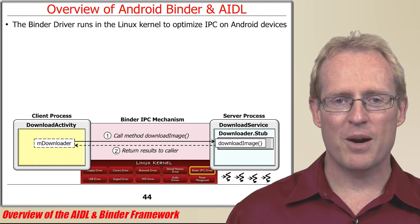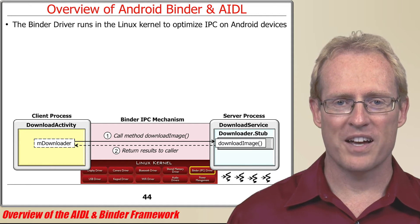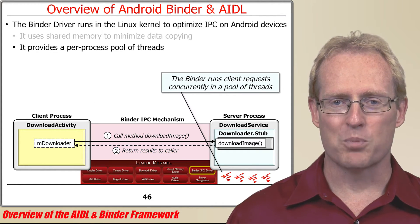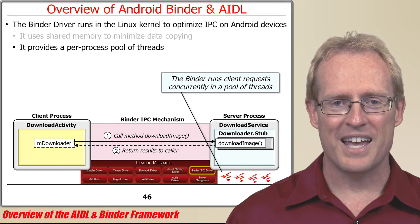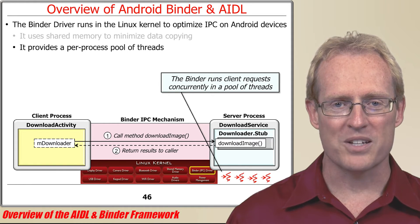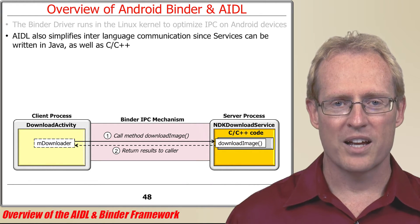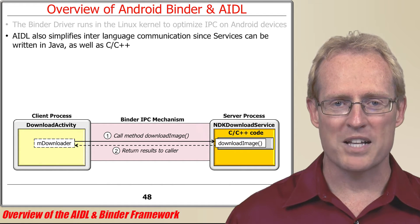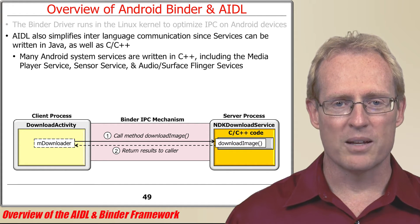The bulk of the Android binder framework is implemented via a device driver that resides in the Linux kernel and is optimized for inter- and intra-process communication on an Android device. Internally, it's implemented using shared memory, which minimizes data copying. The binder framework also provides a pool of threads that run within each Linux process hosting Android applications, which enables multiple client requests to run concurrently and scalably, especially on multi-core devices. The use of AIDL not only simplifies inter-process communication, it also simplifies inter-language communication. For example, although most application services are written in Java, it's also possible to write services in other languages such as C or C++. Many Android system services are written in C++, including the media player service, sensor service, and audio and surface flinger services.